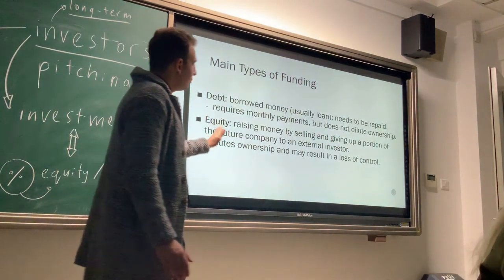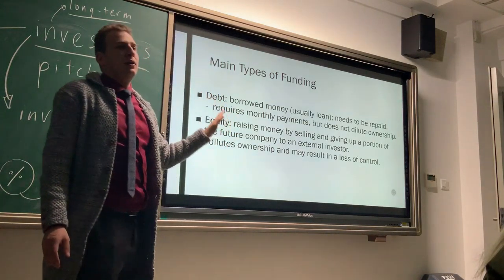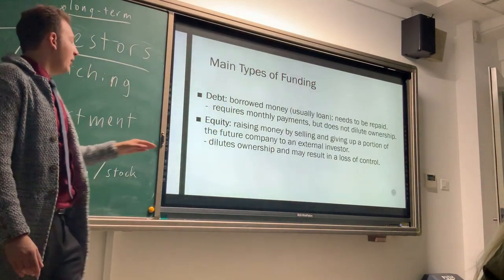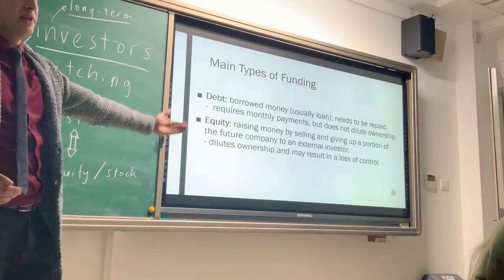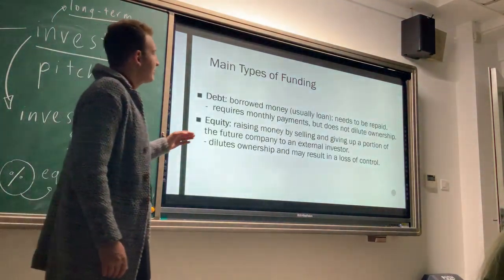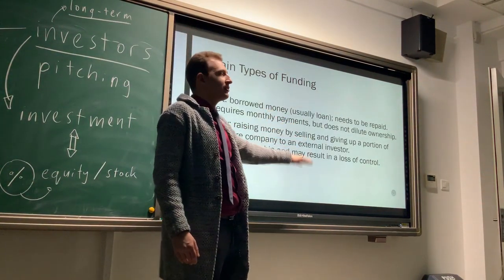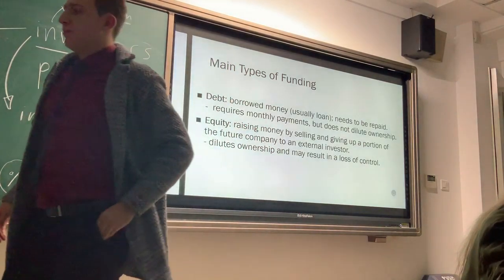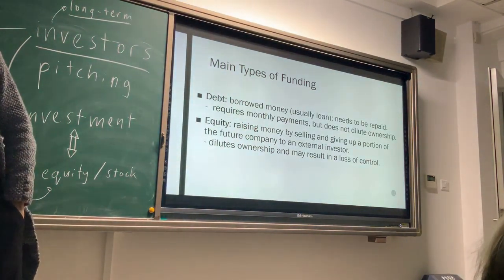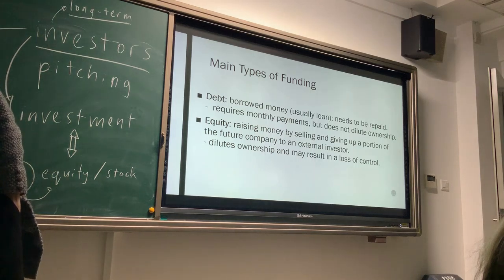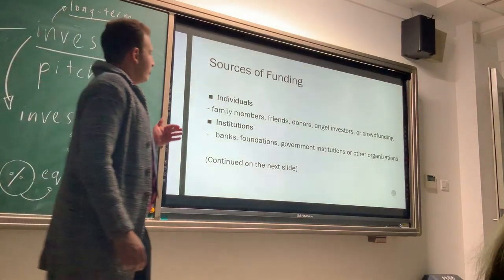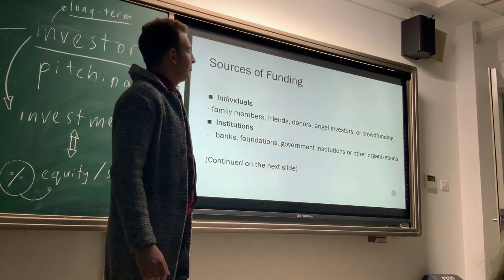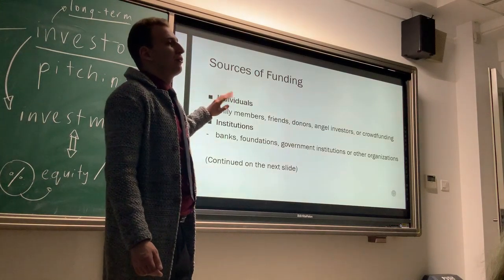Number two is equity. This means you're giving up a portion of your business — you're giving up stock, control in the business, and profits down the line. This dilutes ownership and may result in a partial or even full loss of control over the business eventually.